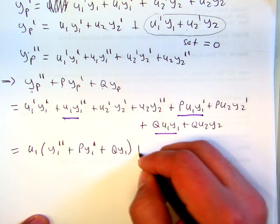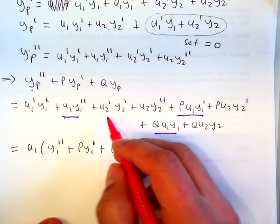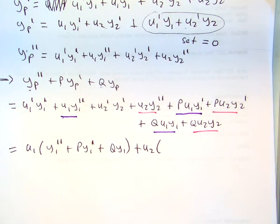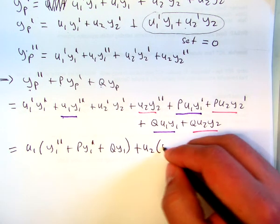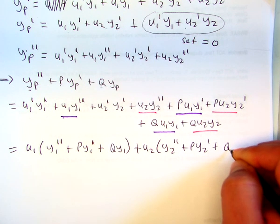I'll do the same with the terms that have a u2 in common. So that's this term, that term, and that term. That gives me y2 double prime plus py2 prime plus q y2.